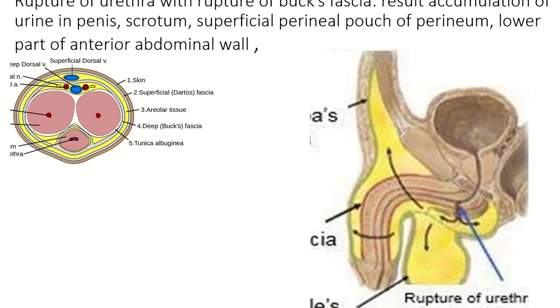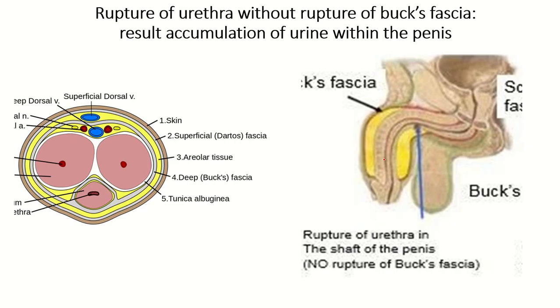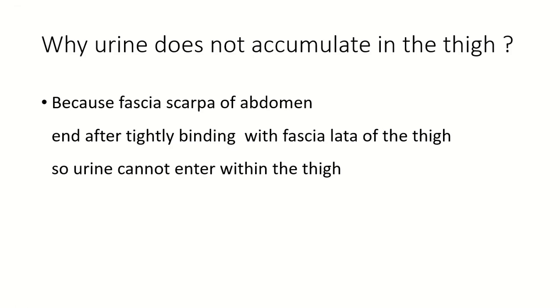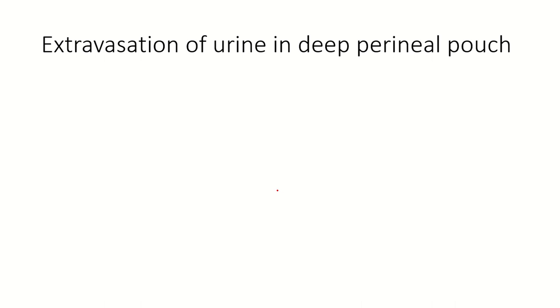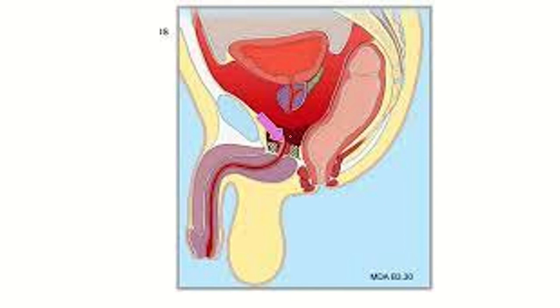If the rupture of the urethra is followed by rupture of the Buck fascia, then urine can accumulate around the penis, lower abdomen, anterior abdominal wall, scrotum, and perineum. But if the Buck fascia is intact, the urine only accumulates around the penis. Urine does not accumulate in the thigh because the Scarpa fascia tightly binds with the fascia lata of the thigh. If rupture of the urethra occurs in the deep perineal pouch, the urine accumulates within the abdominal cavity. This is all about the superficial perineal pouch — please press the like button and subscribe to the channel.